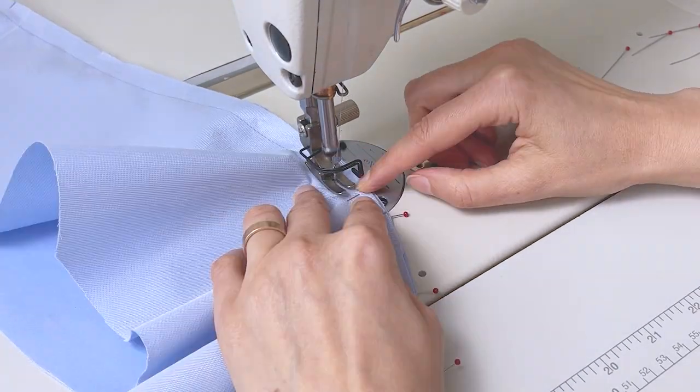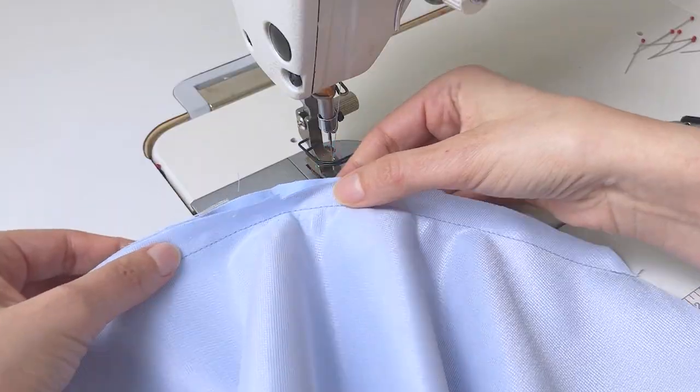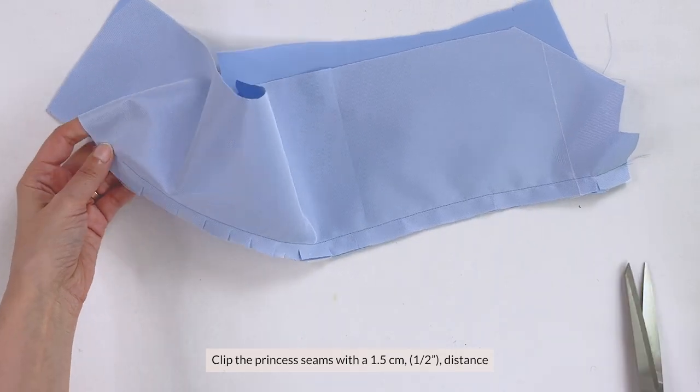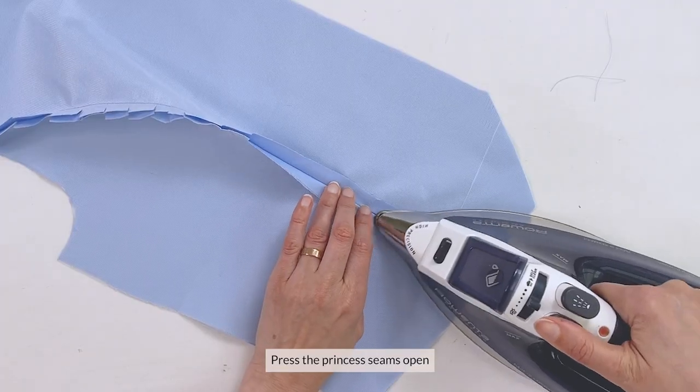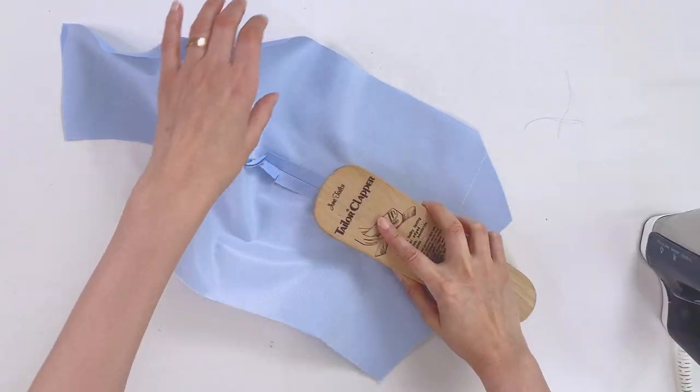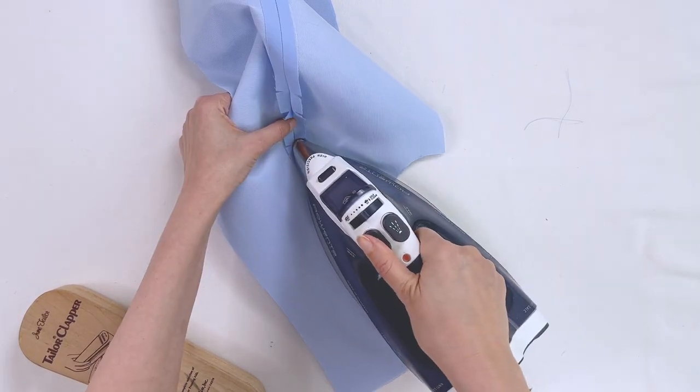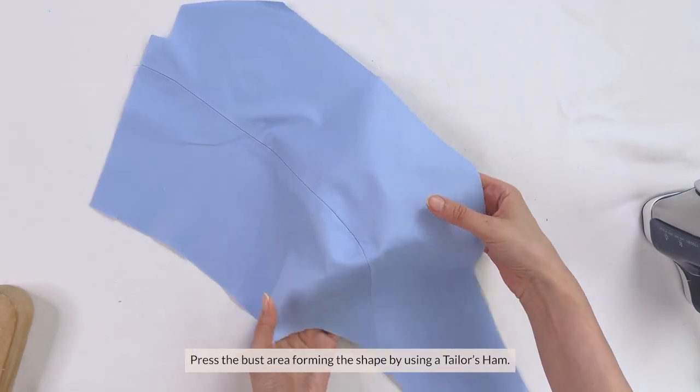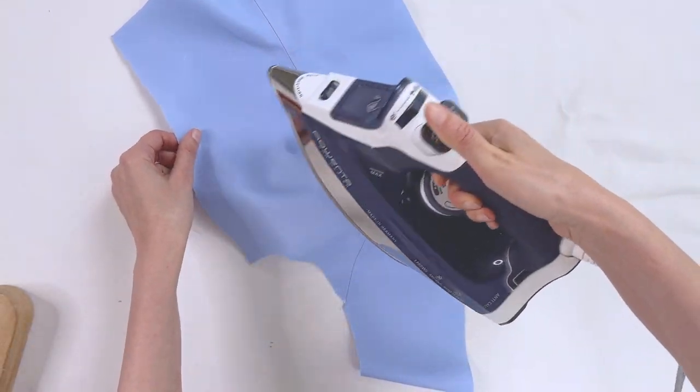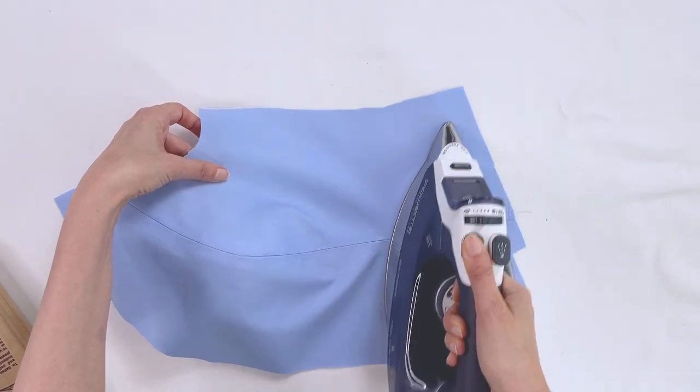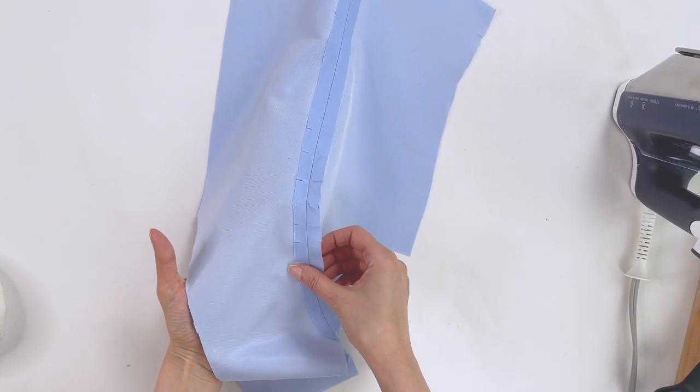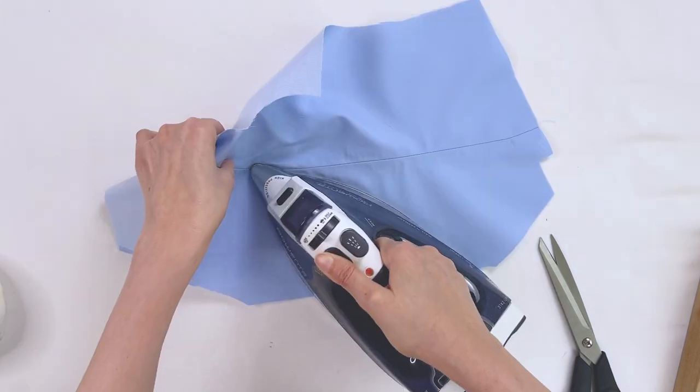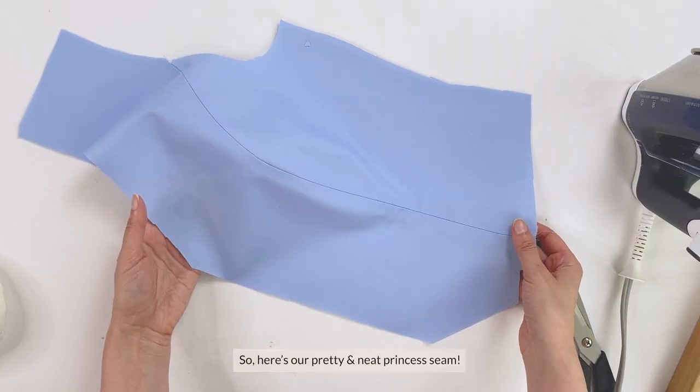Sew the princess seam, and clip the princess seams with a 1.5cm, or ¾ of an inch distance, starting from the under bust to the top. Press the princess seams open, carefully pressing with the natural shape of the seam, and press the bust area forming the shape using a tailor's ham. And trim the seam allowances to half, starting from the top and ending at the under bust. So here's our pretty and neat princess seam.